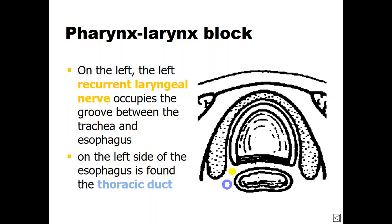Also present is an important structure called the thoracic duct, which is the main lymphatic drainage for the chest regions, as a continuation of the cisterna chyli at the lumbar region. The cisterna chyli is the main lymphatic channel at the lumbar region, ascending as the thoracic duct which reaches the left side of the neck and drains its contents at the confluence between the brachiocephalic vein and the subclavian and jugular veins.